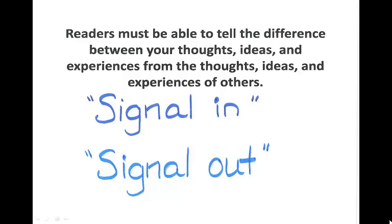We do this by what we call signaling in. You want to establish the credibility of the information as well as tell where it comes from. When we signal out, we generally do so with a parenthetical citation. In lacking a parenthetical citation, we use some kind of transition word in the following sentence.